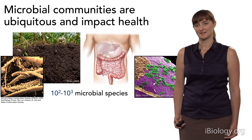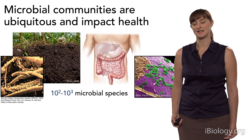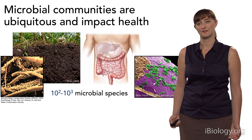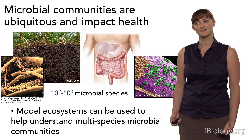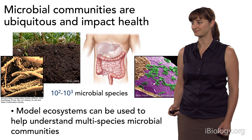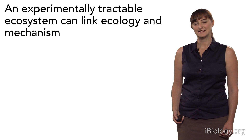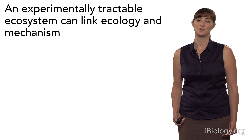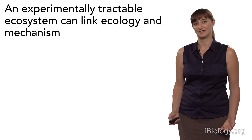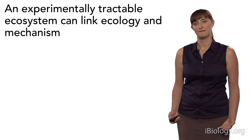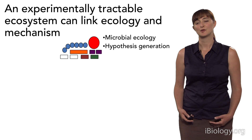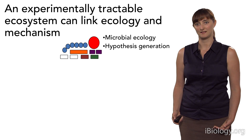If we want to understand how these communities work, we might take an approach similar to using E. coli as a model organism, where we use model communities or model ecosystems. Can we actually come up with model ecosystems that will help us understand how these complex multi-species communities work? What we'd ideally like is an experimentally tractable ecosystem that links the ecology of the system — what's happening in the natural environment — to the mechanism of how things work, allowing us to study microbial ecology in the native setting.